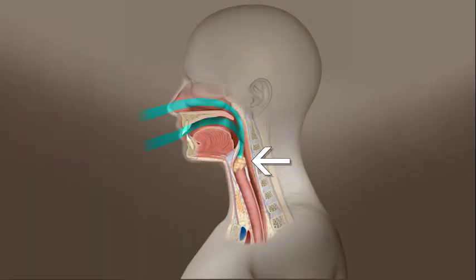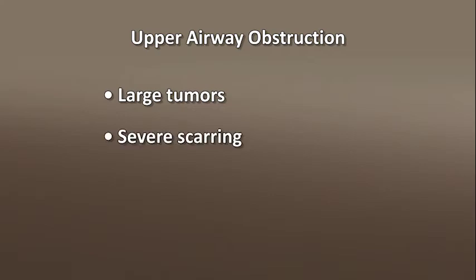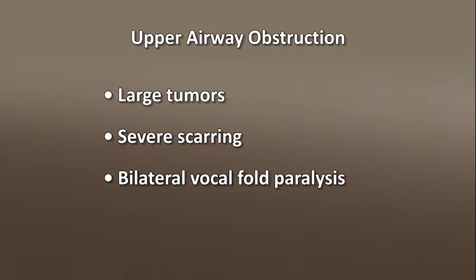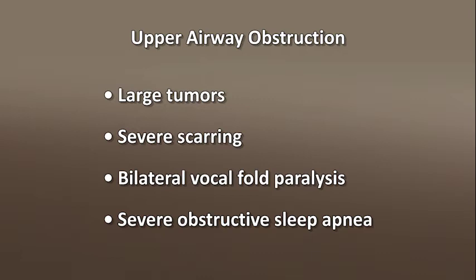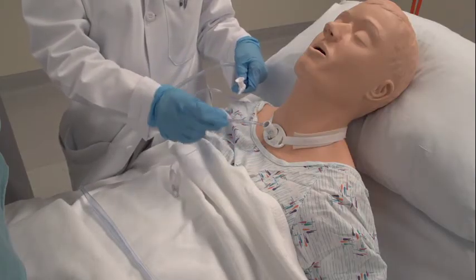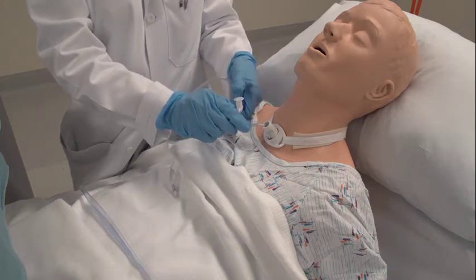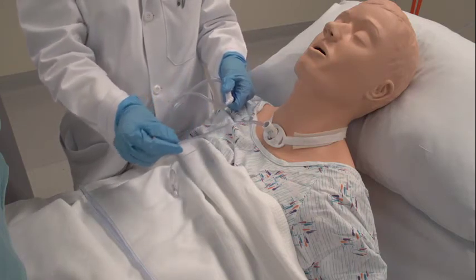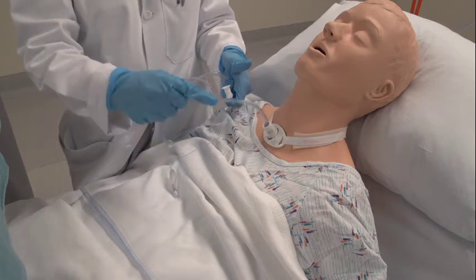Upper airway obstruction is another common indication. In this instance, the tracheotomy is done to bypass the obstruction that may be preventing adequate air from reaching the lungs. Causes of obstruction seen most often include large tumors, severe scarring, or bilateral vocal fold paralysis. Additionally, patients with severe obstructive sleep apnea may be treated with a tracheotomy. Finally, a tracheotomy may be performed for pulmonary hygiene — it can allow ready access for suctioning or bronchoscopy for patients with swallowing problems, excess lung mucus, or who don't have enough strength in their chest muscles to easily cough up secretions in their lungs.